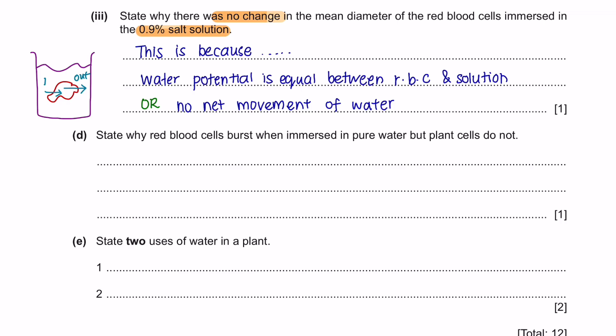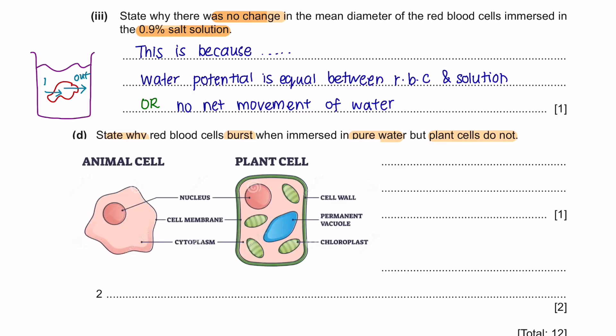Next, question D. State why red blood cells burst when immersed in pure water but plant cells do not. The difference between an animal cell and a plant cell is that a plant cell has a cell wall. And the function of a cell wall is to give the cell extra support. Since animal cells do not have cell wall, it does not have the extra support needed to maintain its shape.